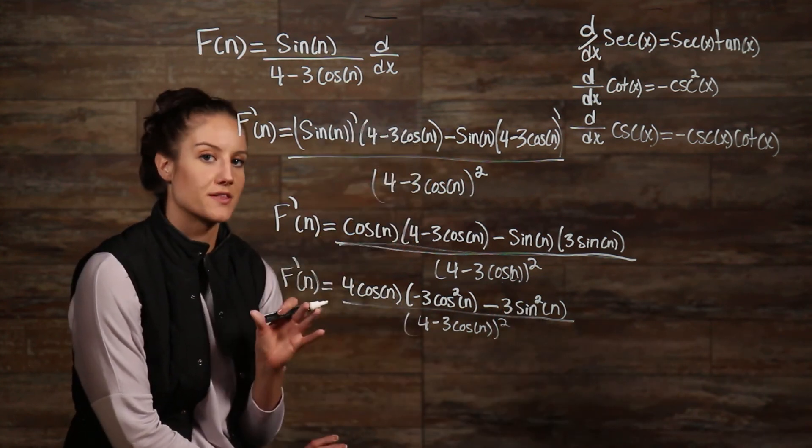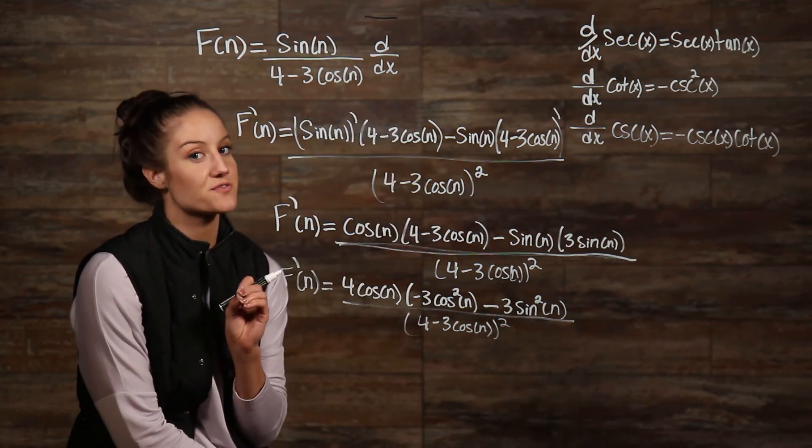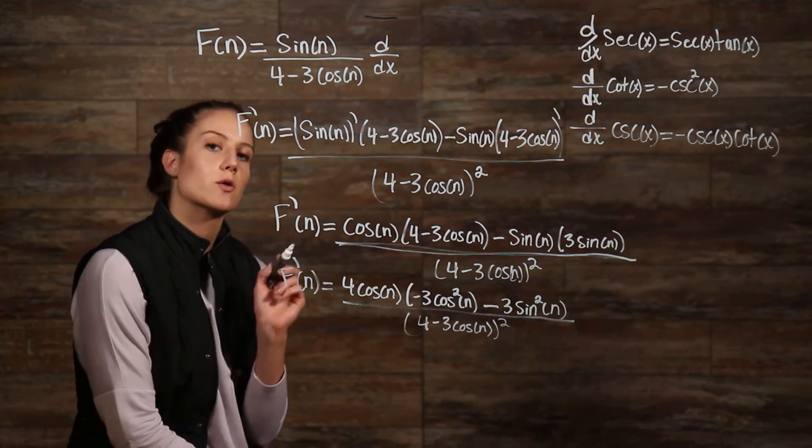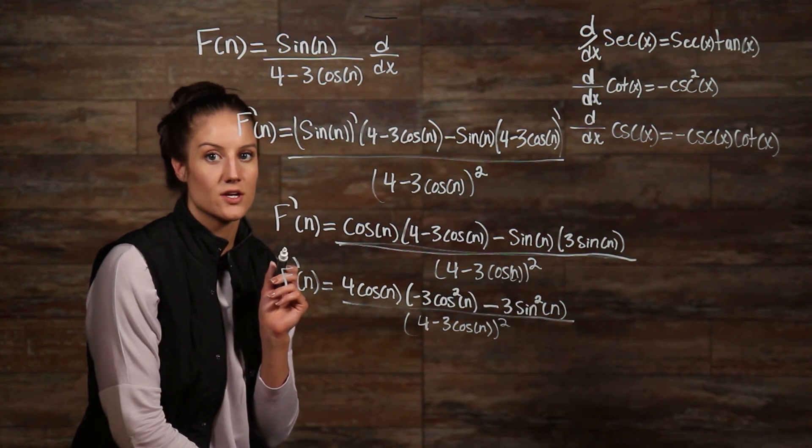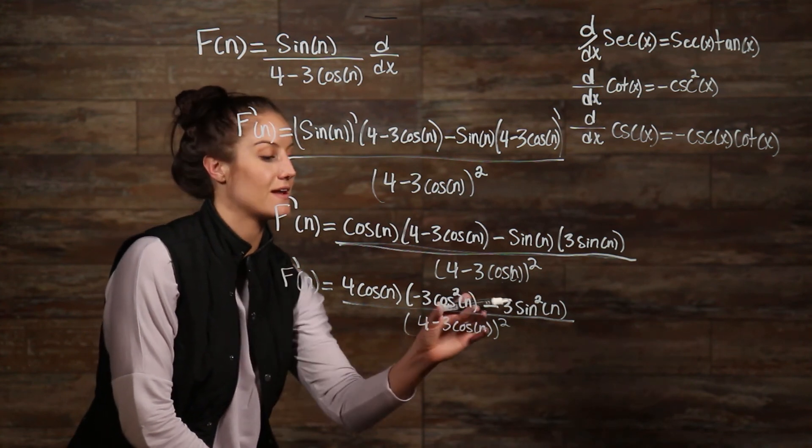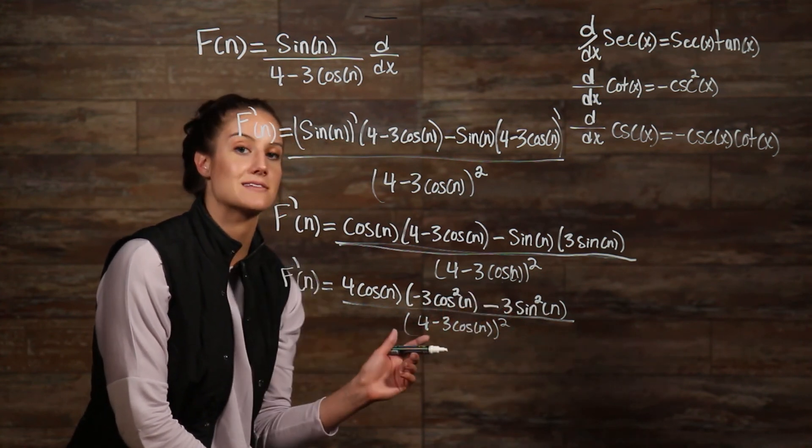It may seem at this point that there is nothing more that can be done, but there is further simplification that we can do. Remember, cosine squared of n plus sine squared of n is equal to 1. So to get that, we can factor out a negative 3 right here, and we will have that same thing.